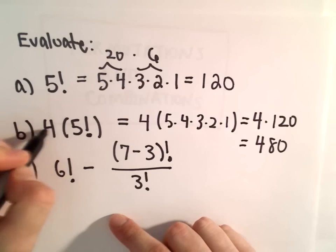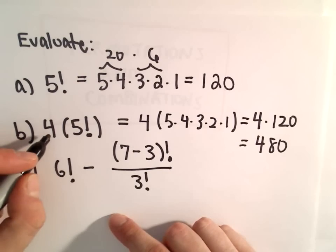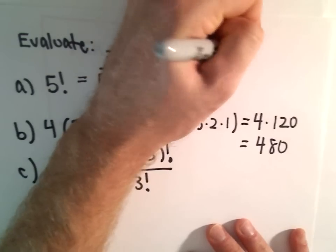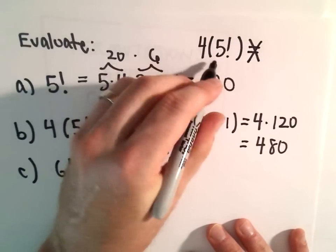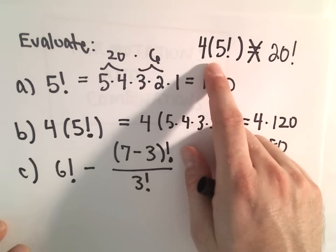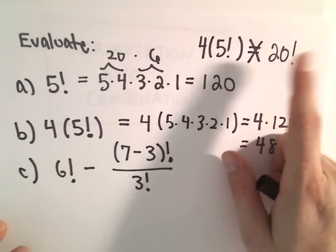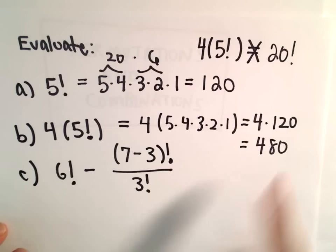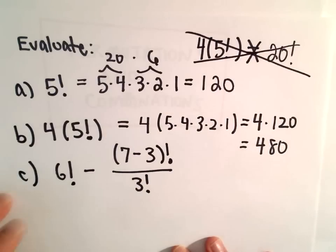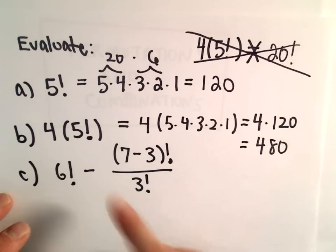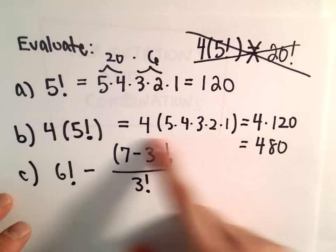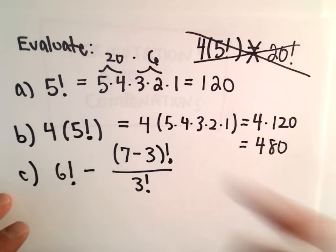Do not multiply, something that might be tempting to do that's definitely not correct. Don't say it's 20 factorial. Don't somehow multiply the 4 and the 5. 20 factorial is going to be a huge, big number. Definitely not going to be 480. So, do not do it that way. If you're not sure whether or not you can do a process, just write it out. And then you'll see everything written out, and you can just multiply.